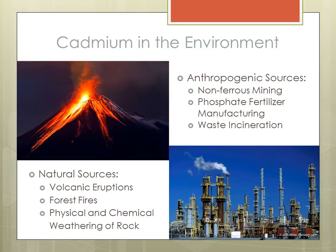Cadmium can be released into the environment through natural and anthropogenic sources. Natural sources of cadmium emission include volcanic eruptions, forest fires, and physical and chemical weathering of rocks. Anthropogenic sources include non-ferrous mining, phosphate fertilizer manufacturing, and waste incineration. Anthropogenic sources of cadmium emissions constitute the majority of cadmium that is emitted into the environment.